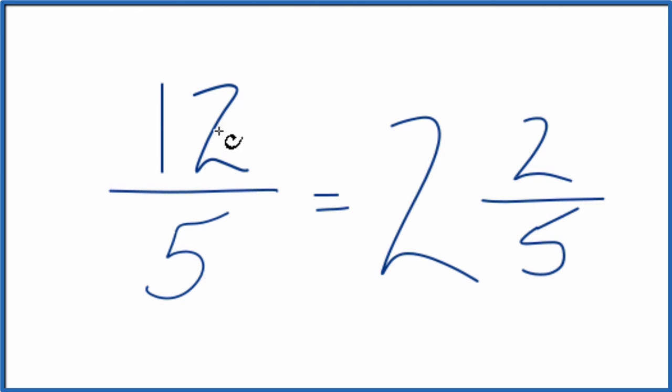So in answer to our question, we can't really simplify 12 fifths, but we can change it to a mixed number, which is 2 and 2 fifths.